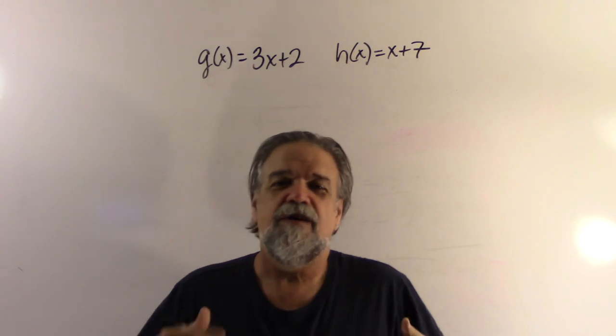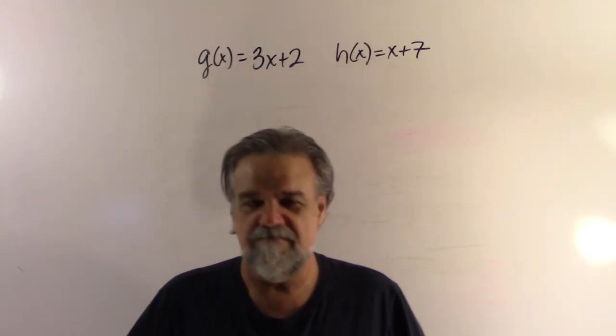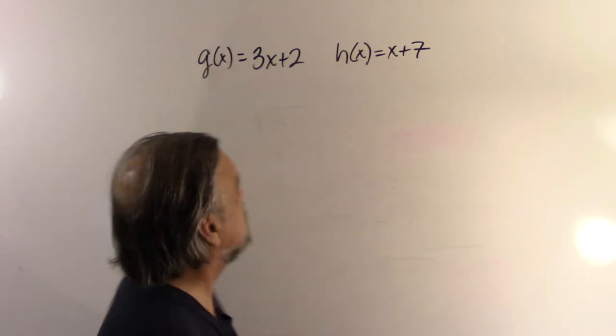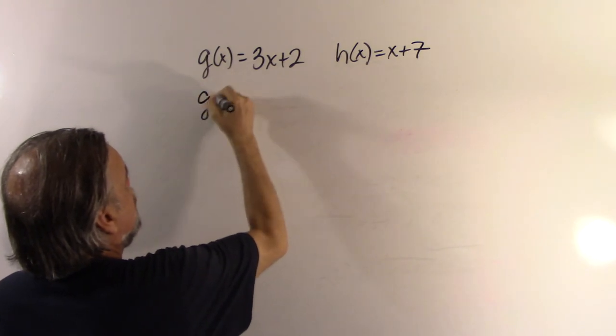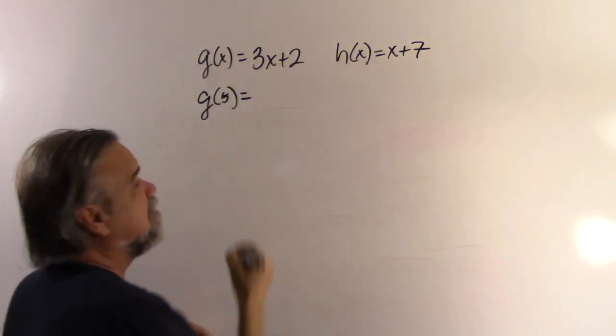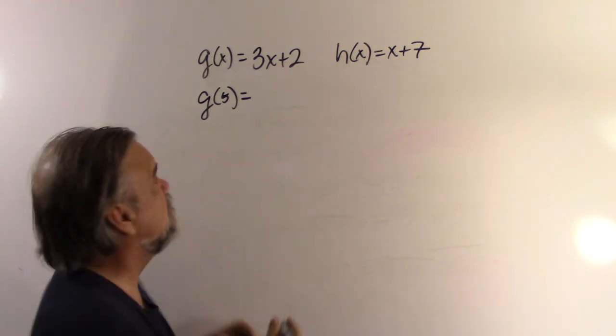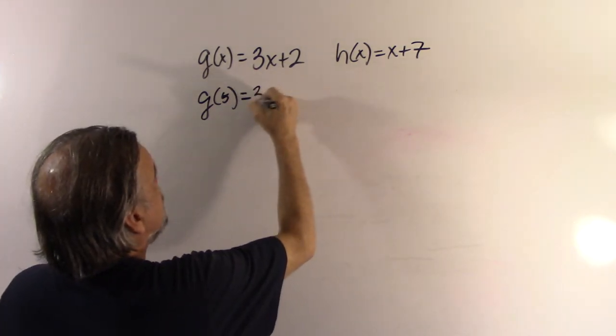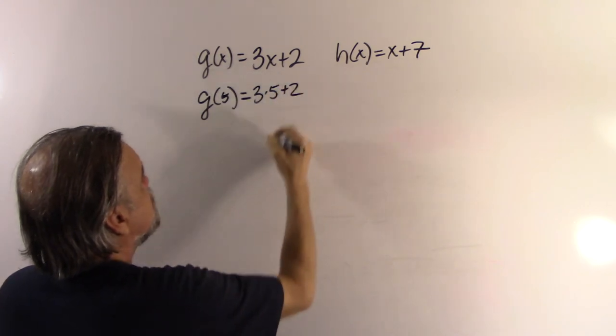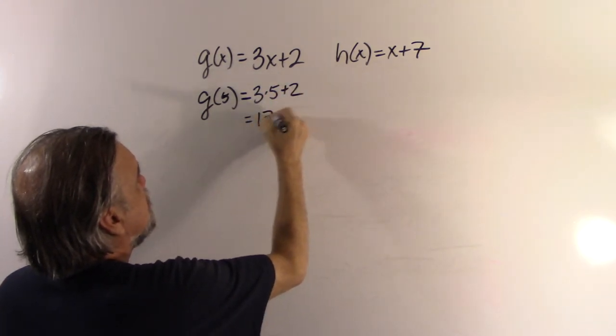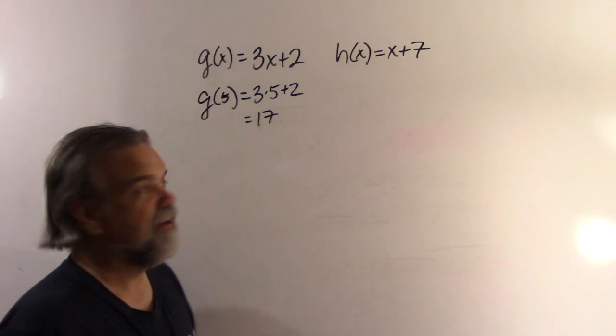Now, we know how to evaluate functions, but humor me. So, if I have g(5), well, I'm just going to plug the 5 into the x. I'm going to replace the x with 5, and so I'd say this is going to be 3 times 5 plus 2, which is 17. Easy enough.